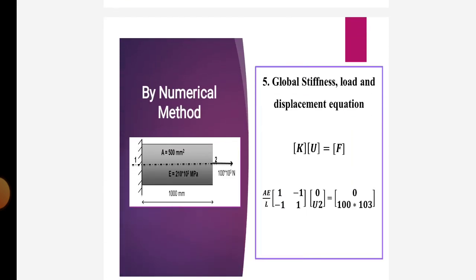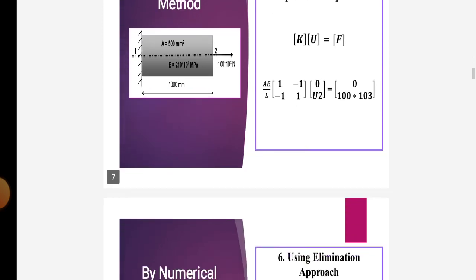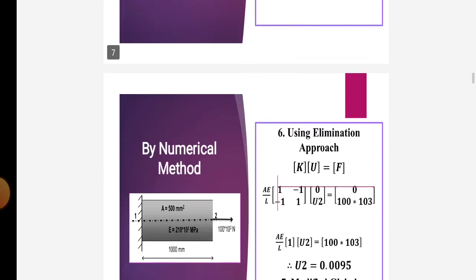In the next step, the global stiffness, load, and displacement equation is K into U is equal to F. So K is equal to AE upon L times the matrix [1, -1; -1, 1], with U = [0, U2] is equal to [0, 100 × 10³].